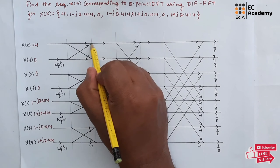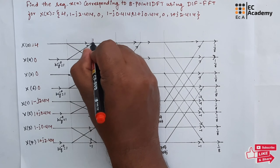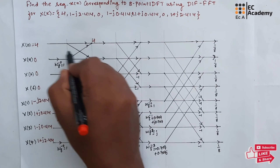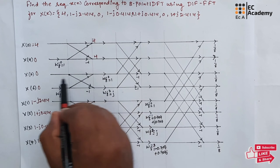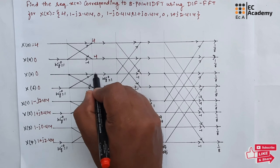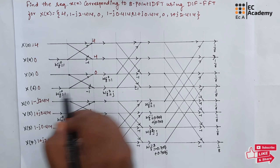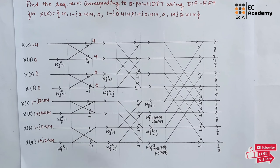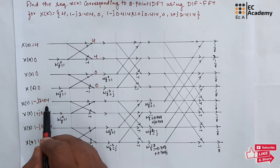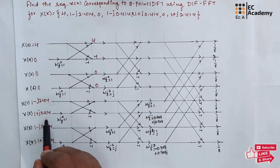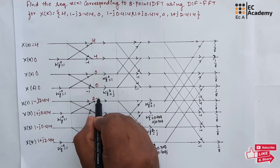To find the output at this point, it will be 4 plus 0, so it will be 4. Output at this point will be 4 minus 0, it will be 4. Output at this point will be 0 plus 0, it will be 0. Output at this point will be 0 minus 0, it will be 0. Output at this point will be 1 minus j2.414 plus 1 plus j0.414, so it will be 2 minus j2.